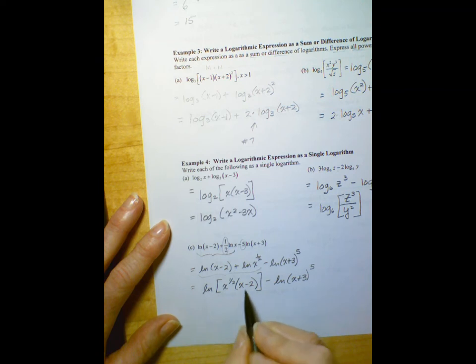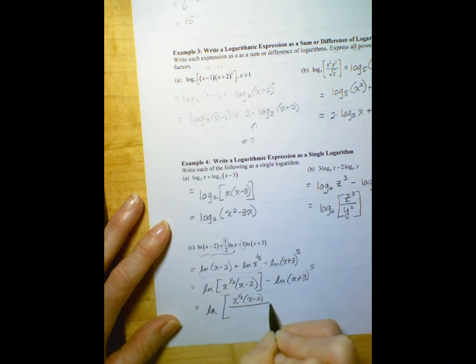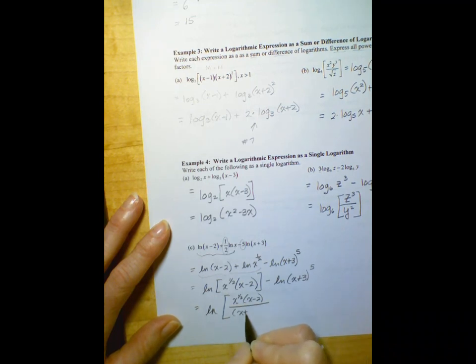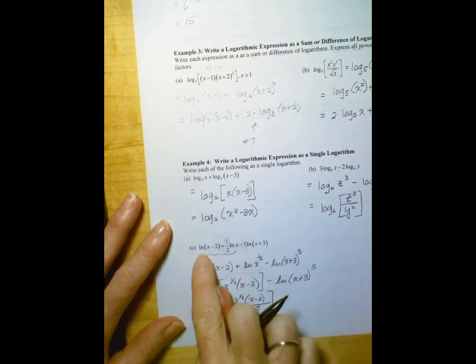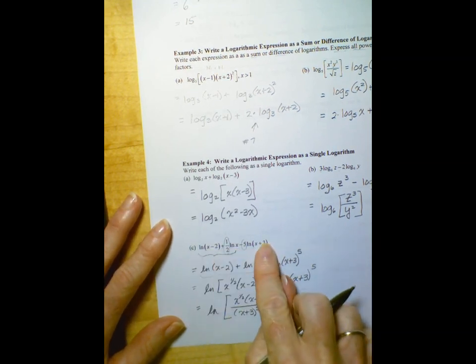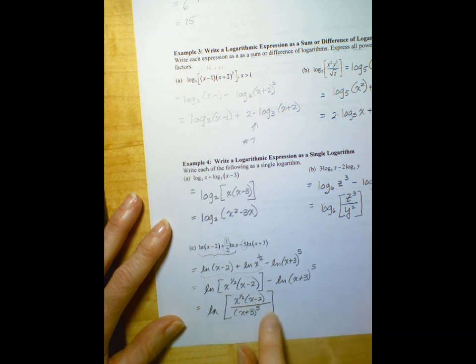And now we have subtraction. So this is log of m minus log of n equals log of m over n, right? So m is x to the 1 half times x minus 2, n is x plus 3 to the 5th. So I've taken these three terms that have natural log in them and written it as one single log here.